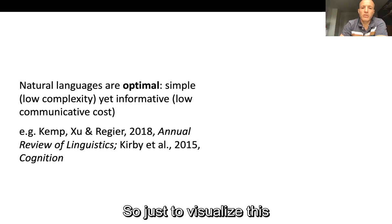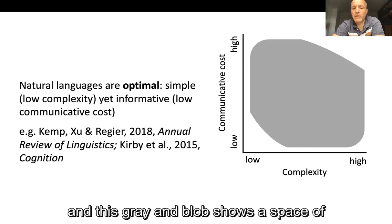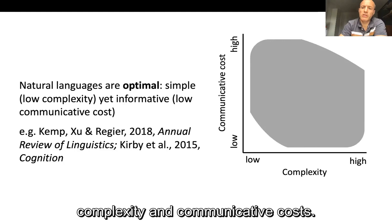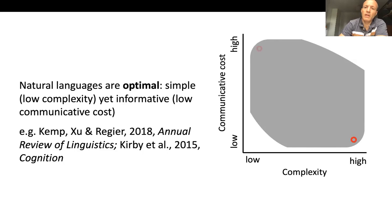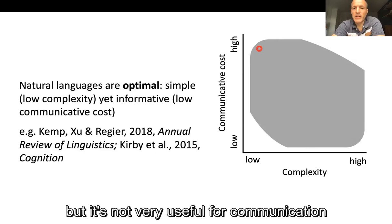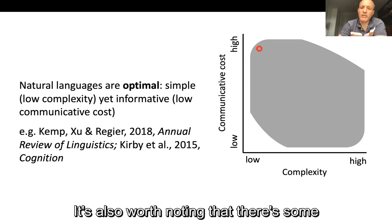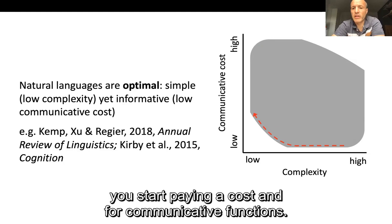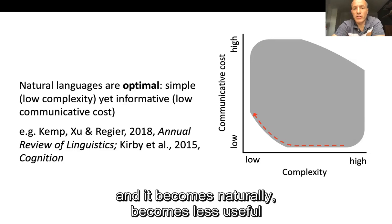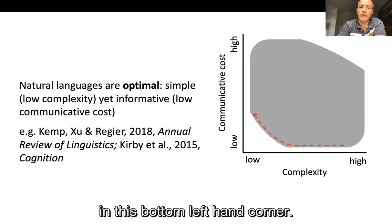To visualise this, a grey blob shows a space of logically possible languages that differ in their complexity and communicative cost. A language in one region would be very useful for communication — low communicative cost — but very complex. A language in another region is very simple but not very useful for communication and has high communicative cost. Once you reduce complexity beyond a certain point, you start paying a cost for communicative function.